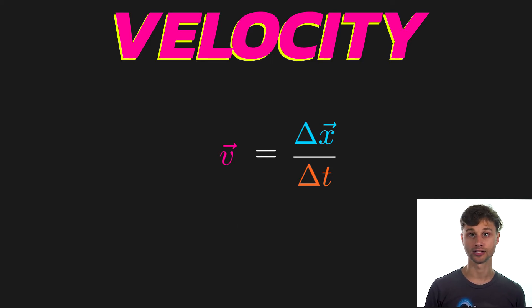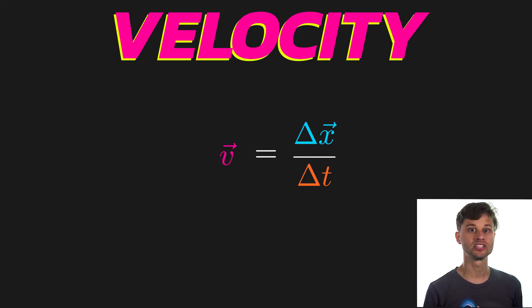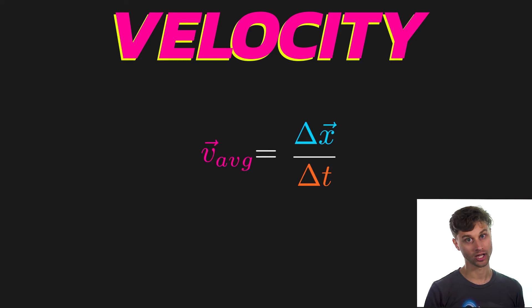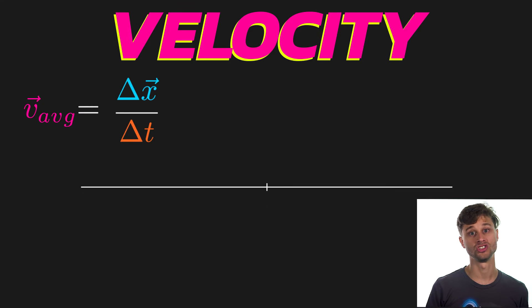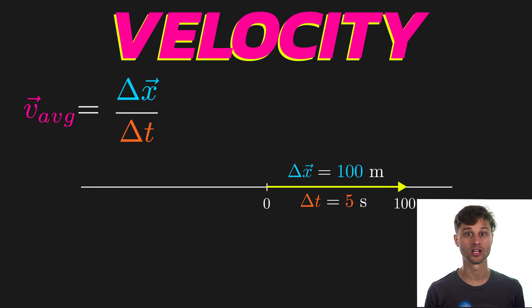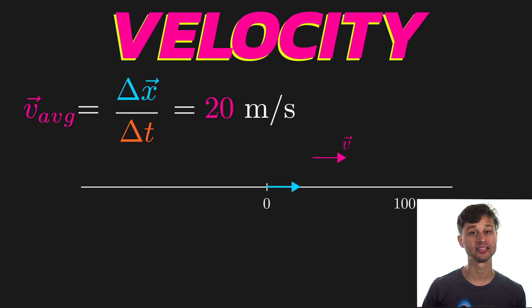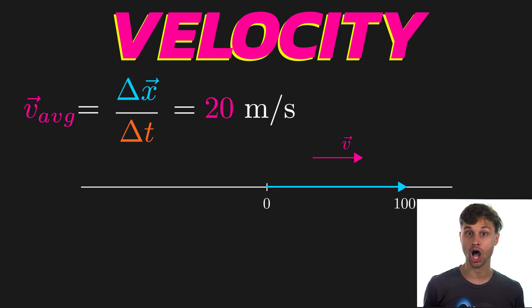Velocity doesn't need to be constant — often it's not, and in our everyday lives velocity is rarely constant. The displacement per change in time is actually the average velocity of the system. So if I'm traveling from position zero to a position 100 meters away and I cover that distance in five seconds, my average velocity for that entire trip was 100 meters divided by five seconds, or 20 meters per second. But that is the average velocity — the actual velocity may have varied throughout the motion.